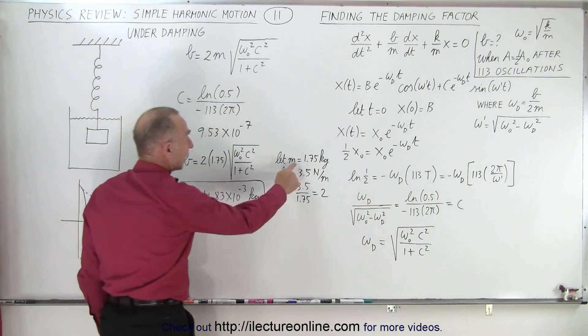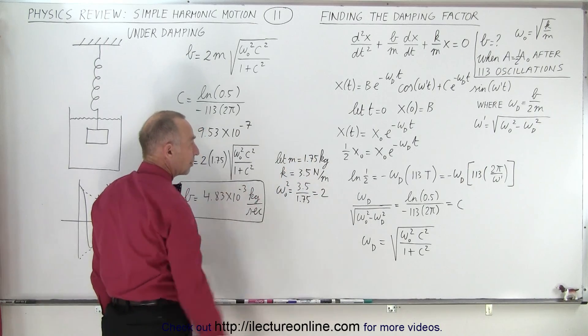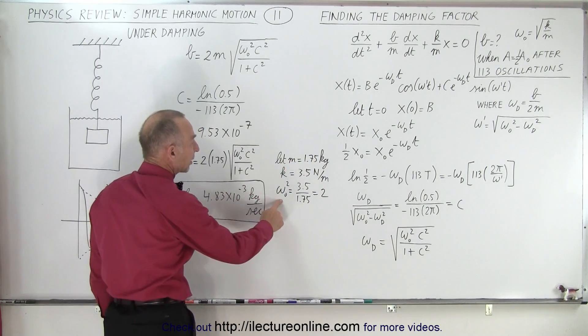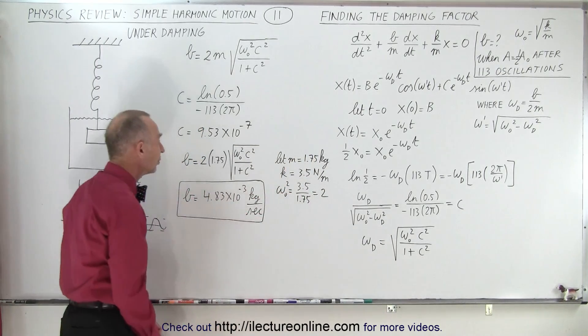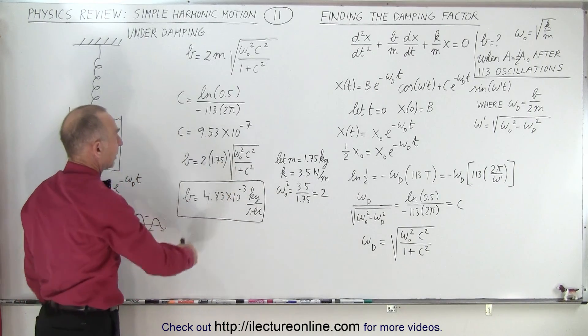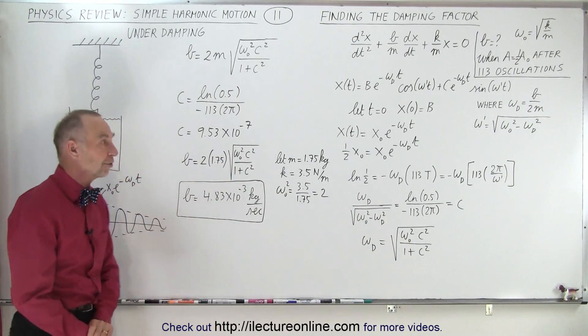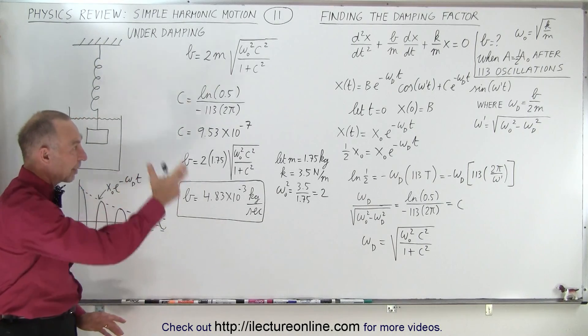When we're given m and k, and in this case let's take some easy numbers like this, then we know that omega sub naught squared is simply equal to 2. We can plug that in here, and there is the damping constant.